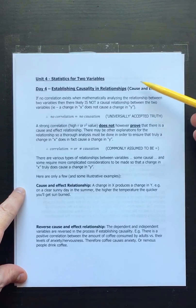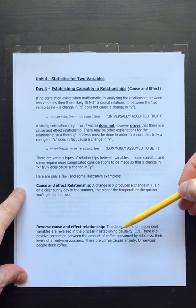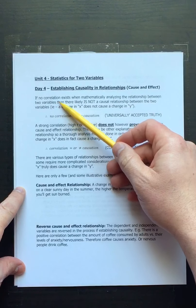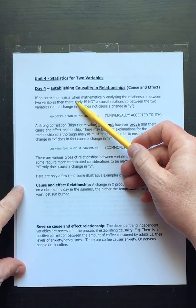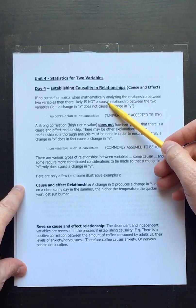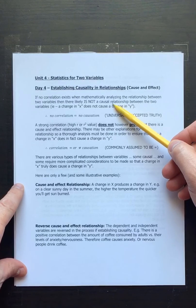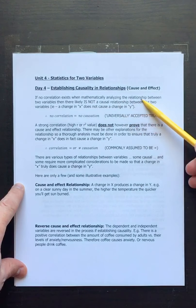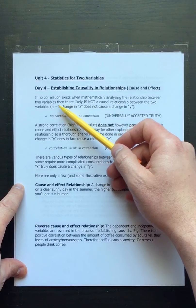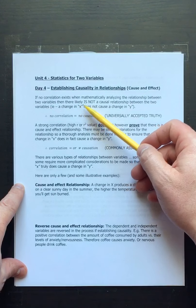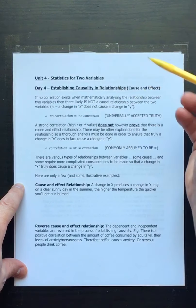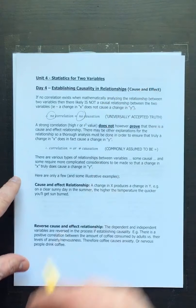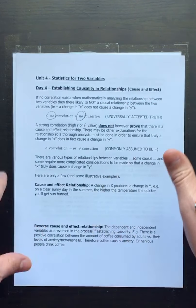This first principle is sort of derived here: if no correlation exists — if the r value is very low or there's no correlation at all when mathematically analyzing a relationship between two variables — then there likely is not a causal relationship. No correlation means no causation, and that is a universally accepted truth.